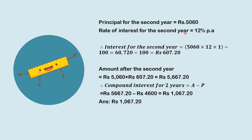The principal for the second year is equal to 5,060. The rate of interest for the second year is 12%. So interest for the second year is 5,060 × 12 × 1 ÷ 100, equal to 607.20. Amount after the second year is P plus I: 5,060 plus 607.20, equal to 5,667.20. Therefore, compound interest for 2 years is A minus P: 5,667.20 minus 4,600, which is equal to 1,067.20.